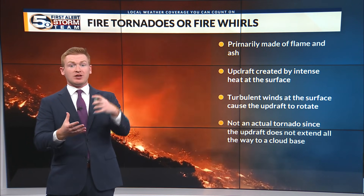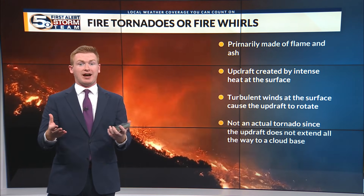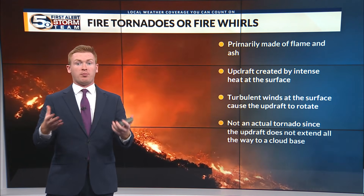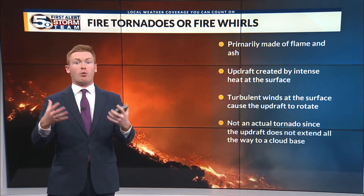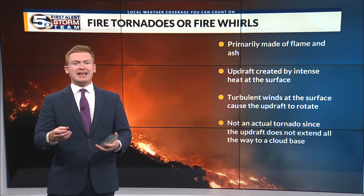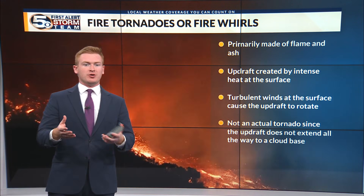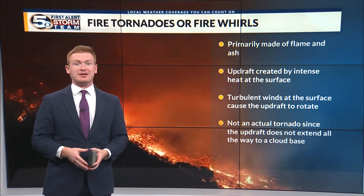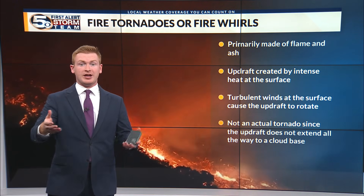Now, you can still have what's called a pyrocumulonimbus cloud, which is a thunderstorm that forms from the rising motion generated by a wildfire. And like normal cumulonimbus clouds, the pyrocumulonimbus can create severe weather, like tornadoes.